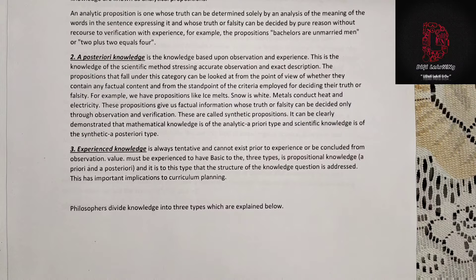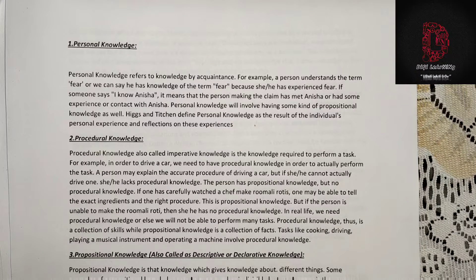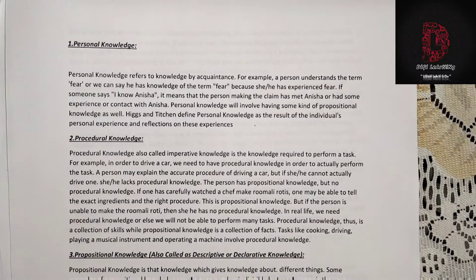The three types — propositional knowledge, a priori, and a posteriori — and the structure of knowledge have important implications for curriculum planning. Philosophers divided knowledge into three types. The first is personal knowledge, which refers to knowledge by acquaintance. For example, a person understands the term 'fear' because they have experienced fear. If someone says 'I know Anisha,' it means that person has met Anisha or had some experience or contact with her.